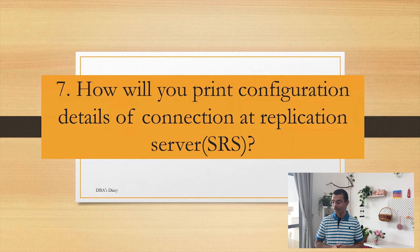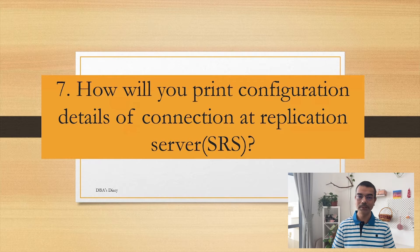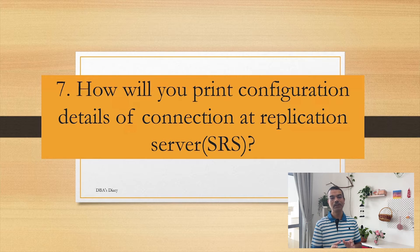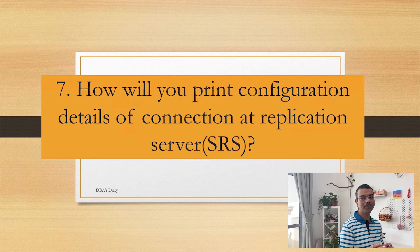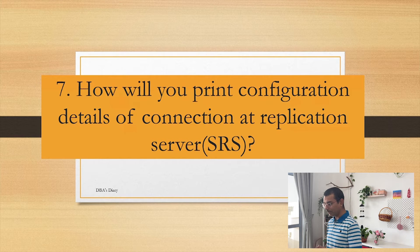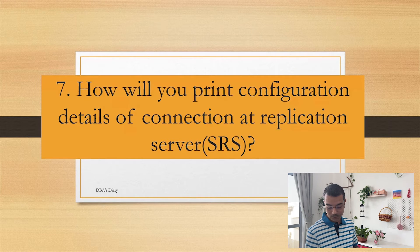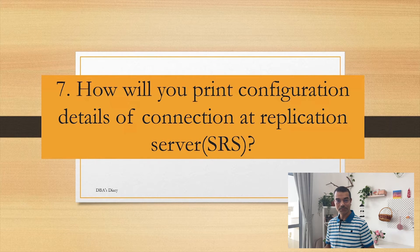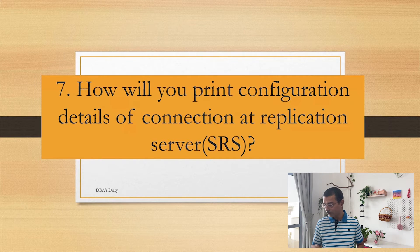How do you print configuration details of a connection at replication server? This is at the level of data server and database. You can have different configurations for one database compared to another database at the same data server. There is a command you can use. When should you use it and why? At which stage do you have the need to find this configuration and check why it is behaving a certain way?